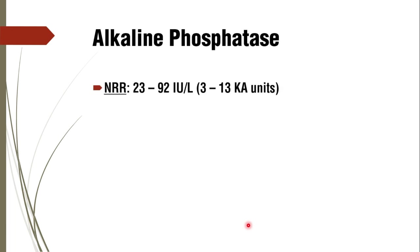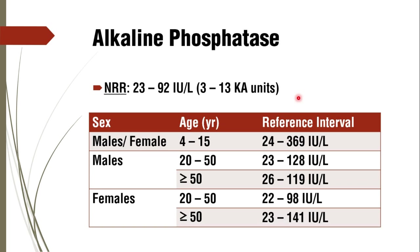Coming to the normal reference range: it is 23 to 92 international units per liter, or 3 to 13 in King-Armstrong units. These are the age-specific normal reference ranges of alkaline phosphatase. During growth — for example, ages 4 to 15 — the normal reference range in childhood is higher compared to older populations because of more osteoblastic activity as bones are growing. Males have slightly higher normal reference ranges compared to females.